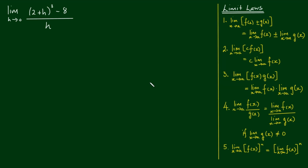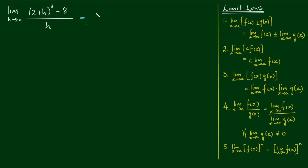If we take h as it approaches 0 as the limit is written, on the top, inside the parentheses, as h approaches 0, this goes to 2. Two to the power of 3 is equal to 8. So on the top we have 8 minus 8, which equals 0. We have 0 on the top divided by — as h approaches 0 — 0 on the bottom. So we have a case of 0 divided by 0, which we can't evaluate. Zero divided by zero is indeterminate, so this is not going to work.